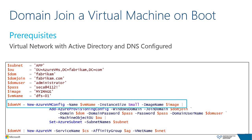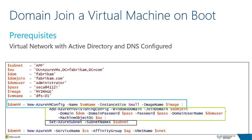In this example, New-AzureVMConfig creates a configuration object with the VM name, instance size, and image name. That object is passed via the pipeline to the Add-AzureProvisioningConfig cmdlet, which specifies Active Directory domain information to use at boot — the VM will find the domain controller based on DNS in your virtual network and use the provided credentials to join the domain. The Set-AzureSubnet cmdlet specifies which subnet to deploy the VM into, and finally New-AzureVM does the actual work of creating the virtual machine.